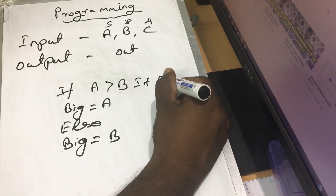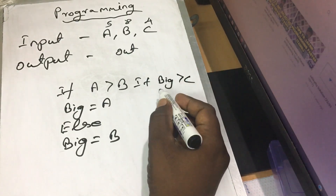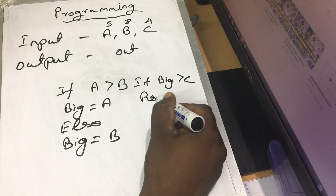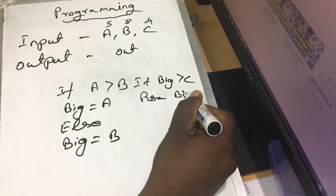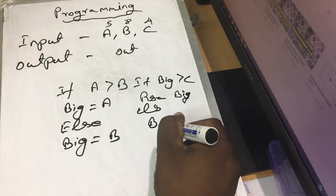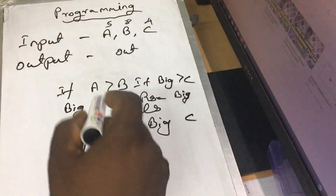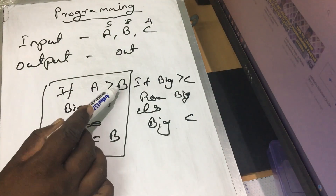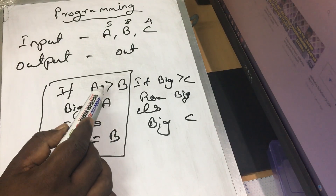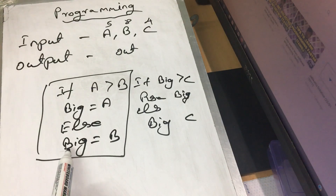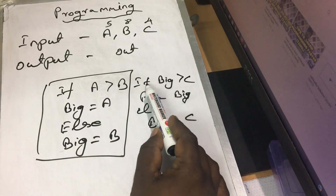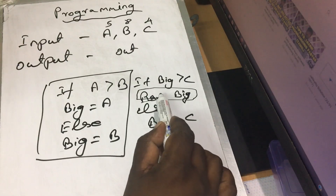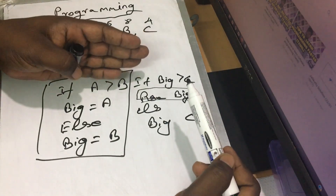If C is greater than B, then you will have an if condition. If B is greater than C, if the condition is true, you will print the result. So that is the result — here we can print the largest number. So what does that mean? We can use two conditional values and we don't need looping.